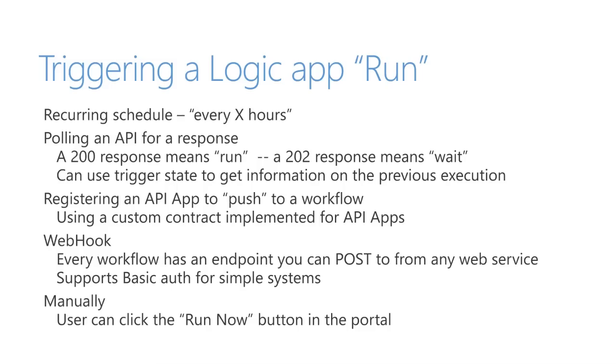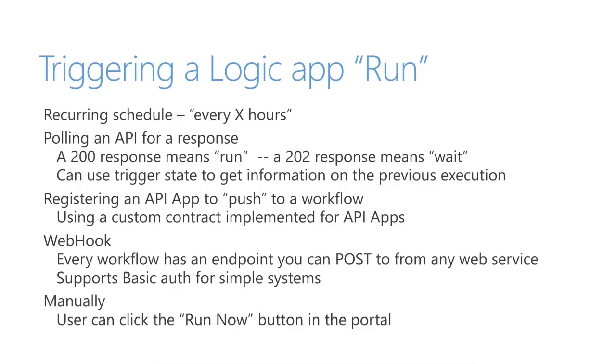Another capability is that certain connectors can register to push into a workflow — that's the example you saw with the HTTP listener. In that case, we call the connector and give it a webhook callback URL, and then the connector can call into the workflow to initiate it. We also support the basic webhook, which is just a POST to a URL. You can go to the portal and get that URL. We support basic auth for that callback URL so you don't have to use AD, but you can. And you can also just manually run a flow by clicking the Run Now button.